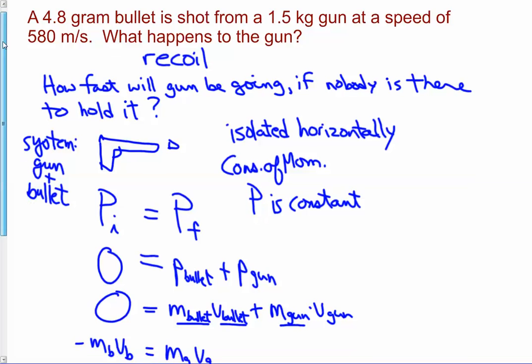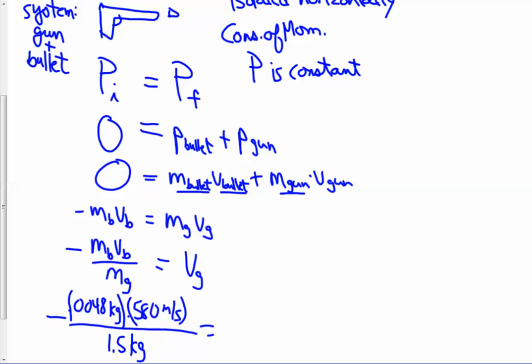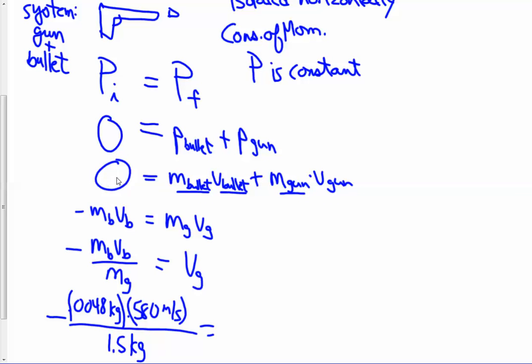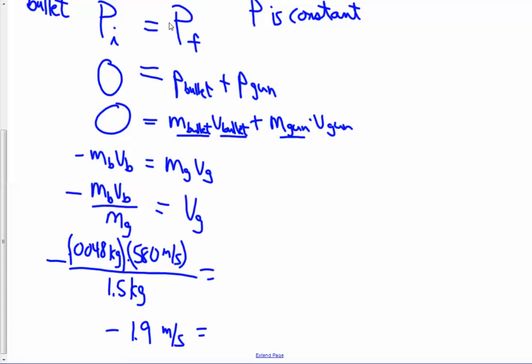The initial momentum of the system was zero, because both the gun and the bullet were not moving at first. That means the momentum after the bullet is fired also has to stay at zero. The bullet has momentum in the positive direction after firing, so the gun has to have momentum in the negative direction — the same amount, so it cancels back to zero. We solved for the velocity of the gun and got that the gun moves backward at 1.9 meters per second.